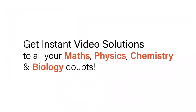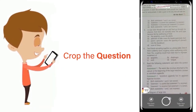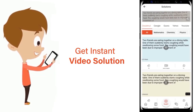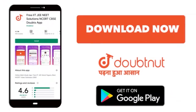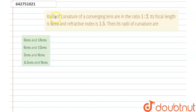With DoubtNet, get instant video solutions to all your maths, physics, chemistry, and biology doubts — just click the image of the question, crop it, and get an instant video solution. Download the DoubtNet app today. Our question is: the radii of curvature of a converging lens are in the ratio 1:2, its focal length is 6 centimeters, and its refractive index is 1.5.